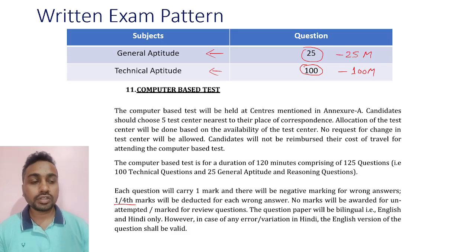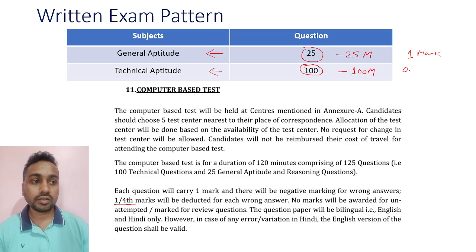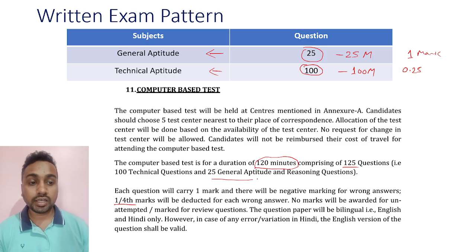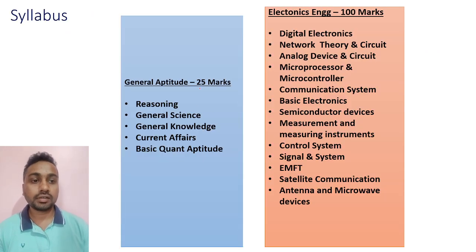There is negative marking of one by four — each question carries one mark and negative marking is 0.25. The duration of this exam is 120 minutes. Total 125 questions: 25 from General Aptitude and reasoning, and 100 from technical.